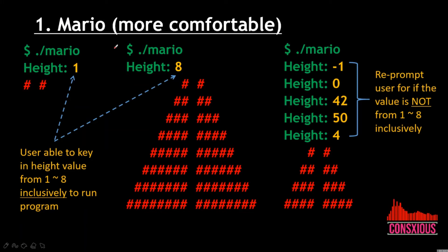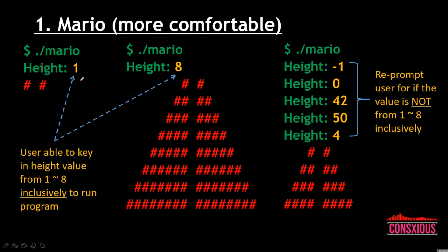For the Mario More Comfortable program, we're going to run dot-slash mario. The program will prompt for a height value, and the user must key in a value between one and eight inclusively. For example, keying in one shows a small pattern, and keying in eight shows the full pattern — the eight here represents eight columns: one, two, three, four, five, six, seven, eight.